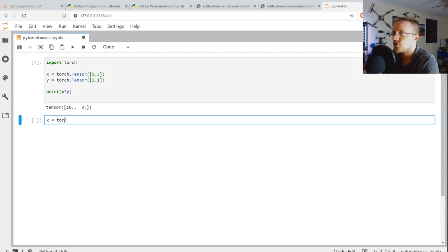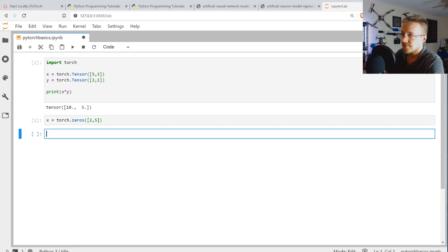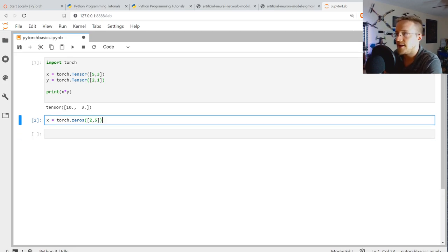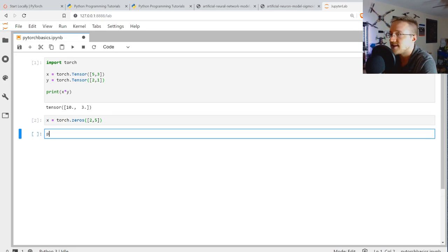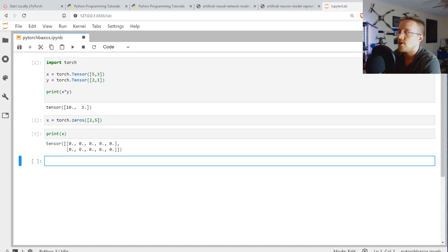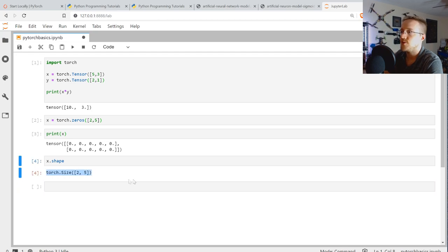The other thing that we can do is we can say X equals torch.zeros, and then we can specify a shape. Let's say a 2 by 5. And one thing we can say is, well, we could print X. Then we could also say X.shape.